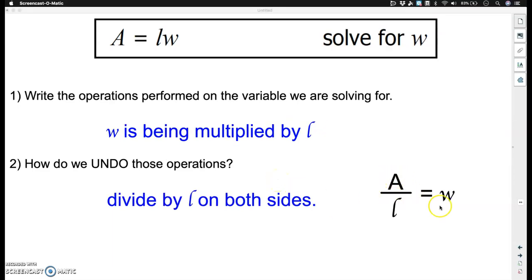When we do that, we are left with w equals a divided by l. Notice that we have isolated the variable w and we now know what it is equal to. It is equal to the area divided by the length.